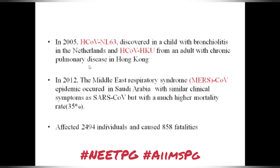In 2005, human coronavirus NL63 was discovered in a child with bronchiolitis in the Netherlands, and human coronavirus HKU1 was found in an adult with chronic lung disease in Hong Kong. These did not have pandemic potential. In 2012, a Middle East respiratory syndrome epidemic occurred in Saudi Arabia with similar clinical symptoms to SARS coronavirus, but mortality was very high at 35%, affecting around 2,500 individuals and causing 858 fatalities.